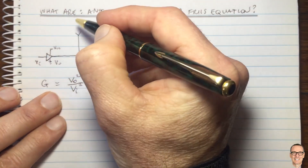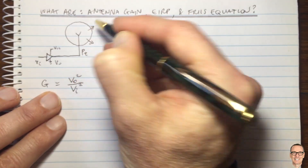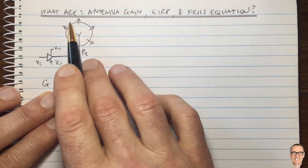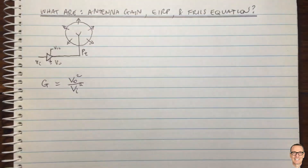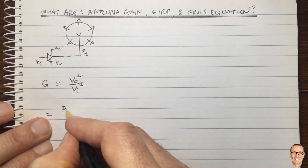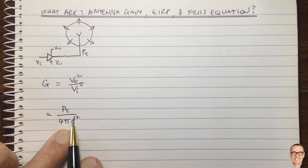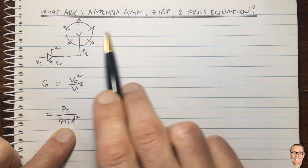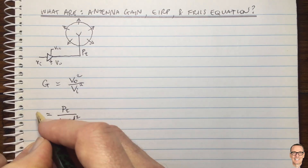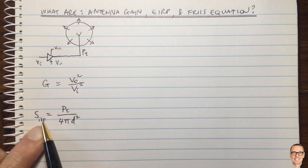Let's think first of all about an isotropic antenna, which radiates in all directions equally. In that case, the power density on the surface of the outgoing wave equals the transmitted power divided by the surface area of the sphere: S_iso = PT / (4πd²), where d is the distance between transmitter and receiver. This is the power density for the isotropic antenna.